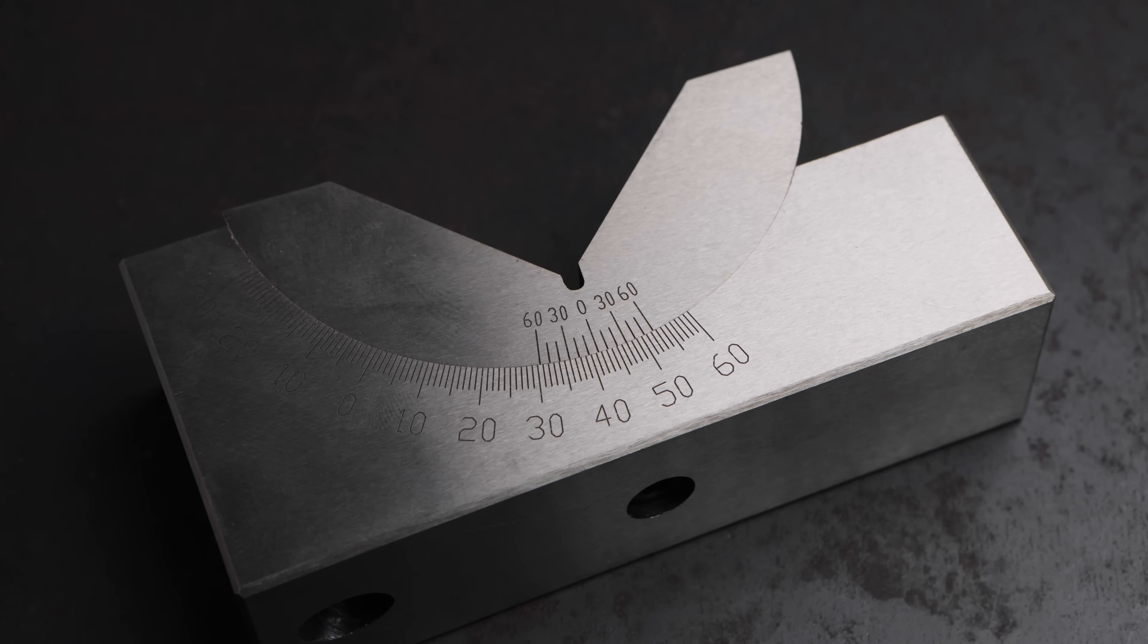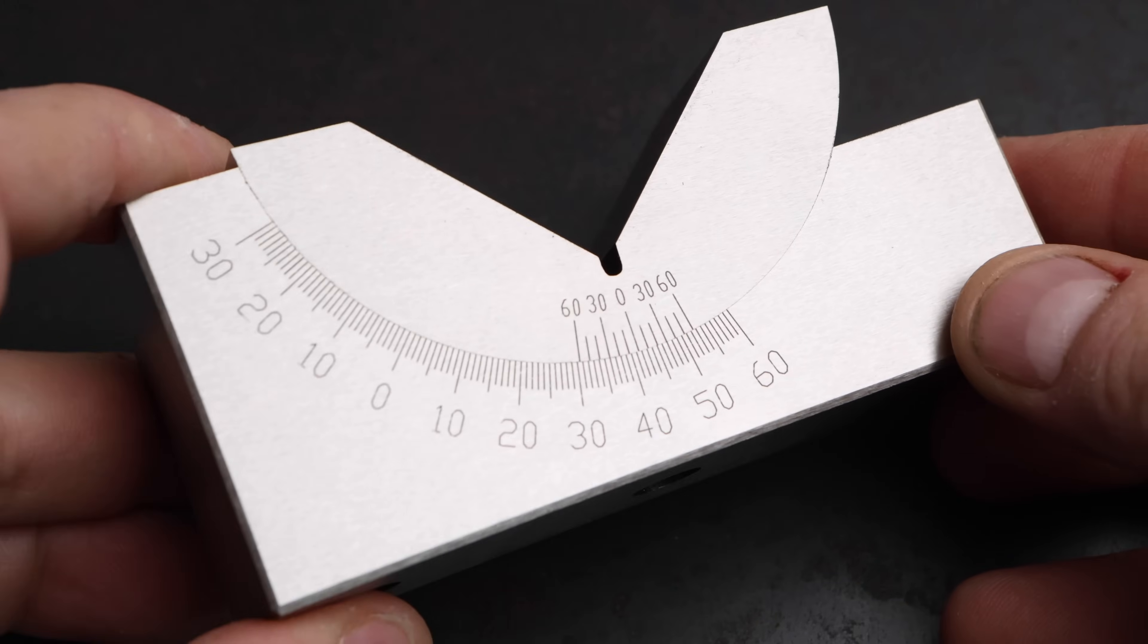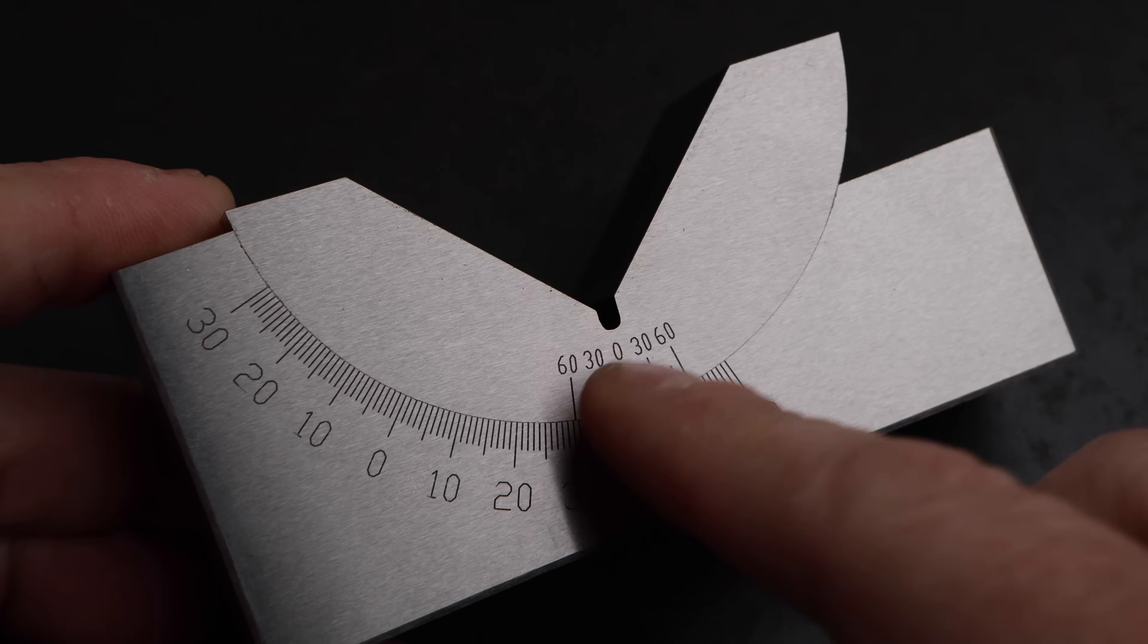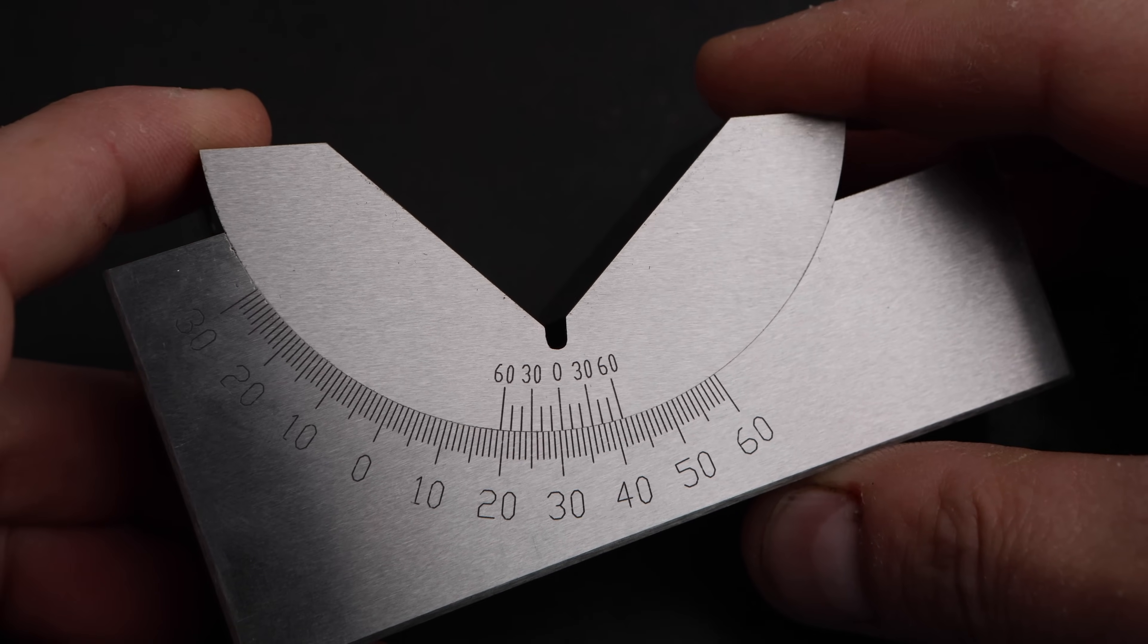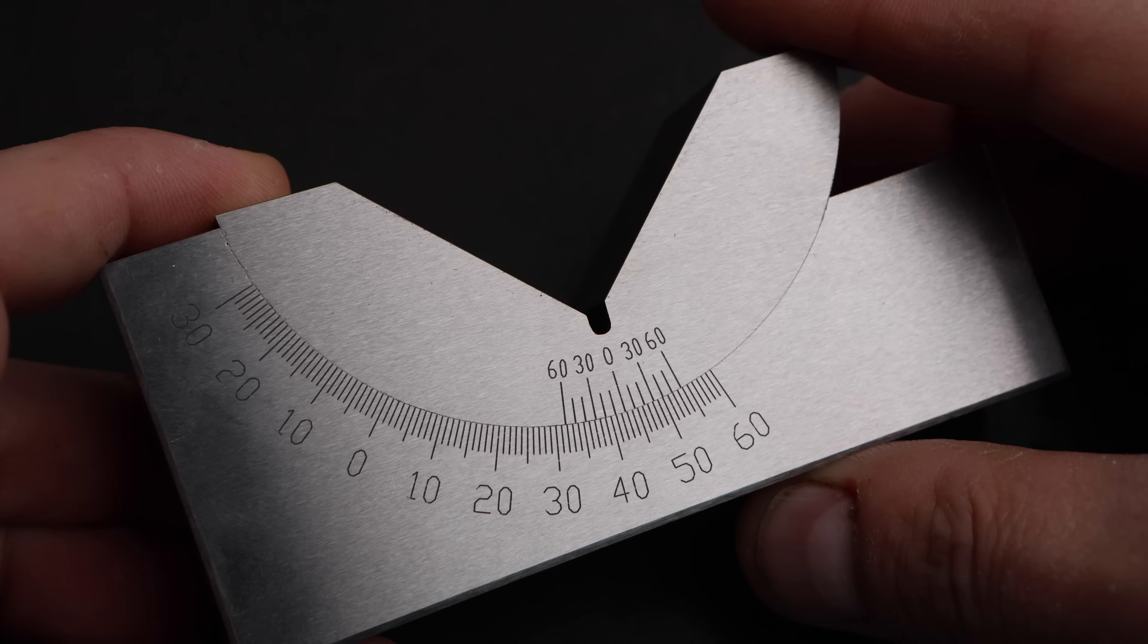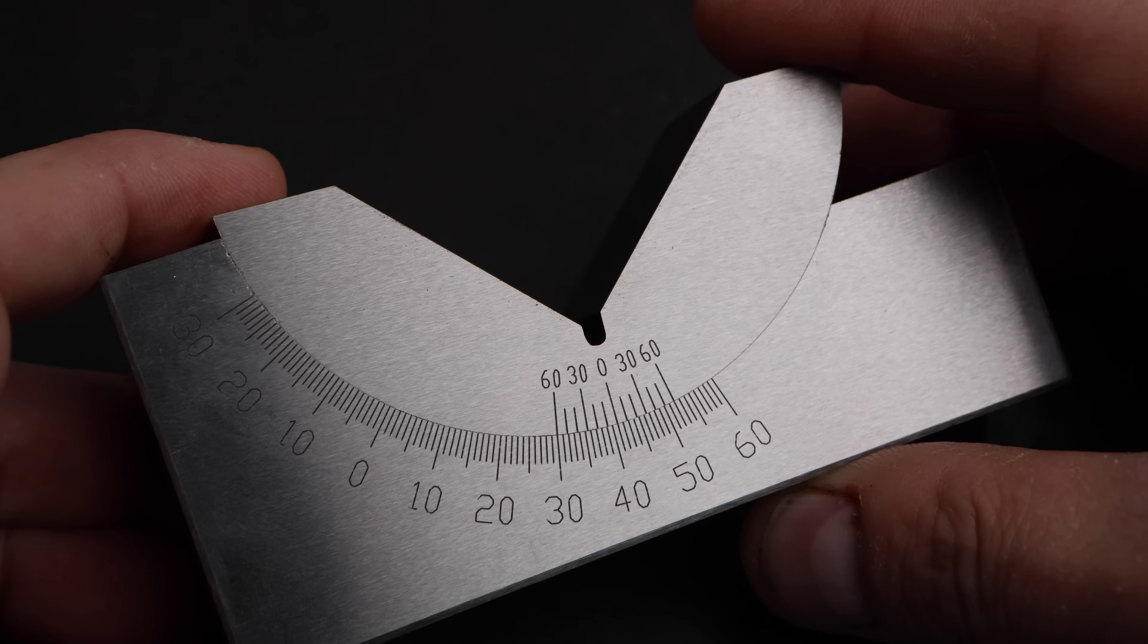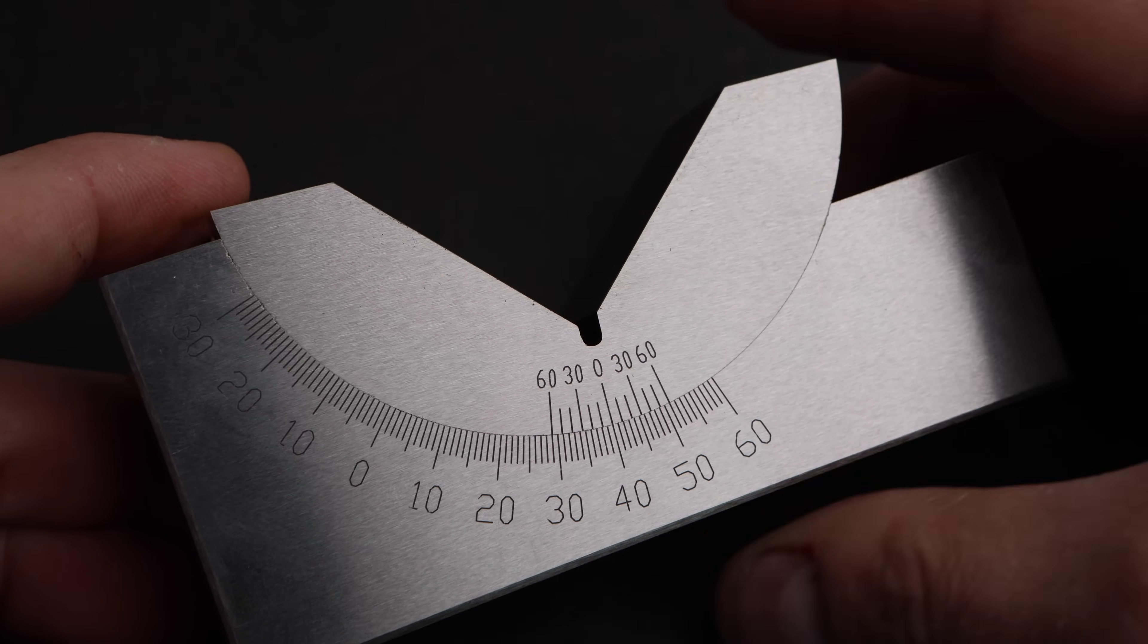Where I think this machine is really going to come into its own and provide the most value for me is in the engraving of scales like you see here on this adjustable V block. And if I could achieve results like these, then I think that would take my tool making to the next level and allow me to accomplish things that would be very difficult or impossible with other methods.